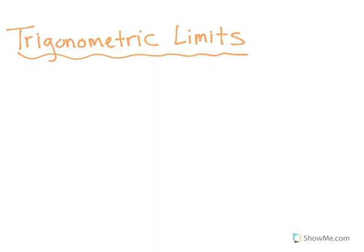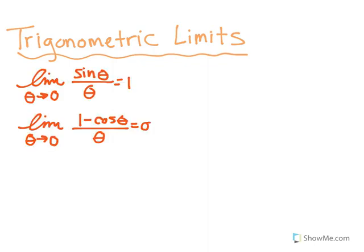In this tutorial, we're going to talk about trigonometric limits. And these are our two new limit laws. Basically, the limit as theta approaches 0 of sine theta over theta is equal to 1. The limit as theta approaches 0 of 1 minus cosine theta over theta is equal to 0. These are just two new limits that you're going to have to get really well aware of and just kind of know by heart.